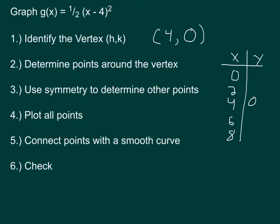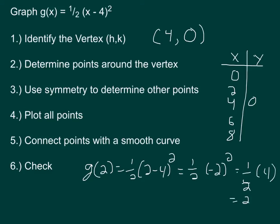I'll do this one at a time. g(2) would equal (1/2)(2 - 4) squared. 2 minus 4 is -2, and when I square -2, it becomes a positive 4. So I've got 1/2 of 4, which is 2. So g(2) is 2, and then based on symmetry, because 2 and 6 are both two spots away from 4, I can say that (6, 2) will be a point on this curve.